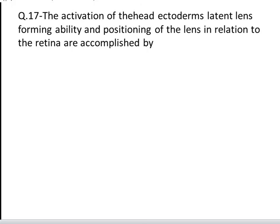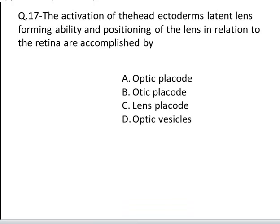The next question is: the activation of the head ectoderm's latent lens-forming ability, and the positioning of the lens in relation to the retina, are accomplished by. These are your four options: A. Optic placode, B. Otic placode, C. Lens placode, D. Optic vesicles. Yes, the correct answer is D, Optic vesicles.